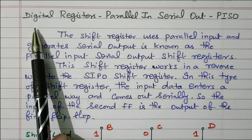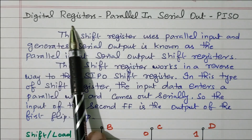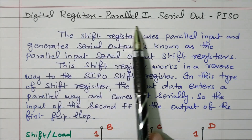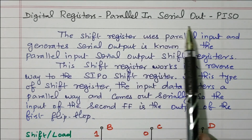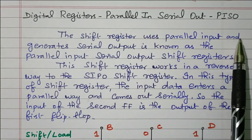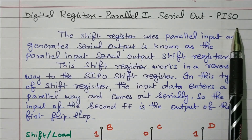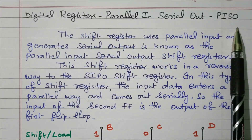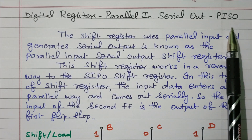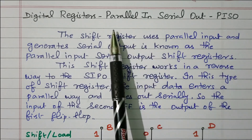In this video we will see the digital register — the type is Parallel In Serial Out (PISO). Subscribe to the channel for more videos and notifications. A soft copy of this material is available in the drive; the link is given in the description box. Now we'll go to the topic.